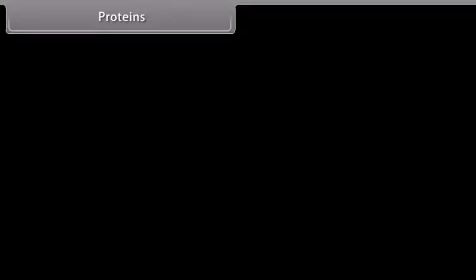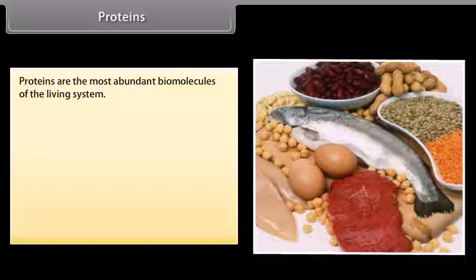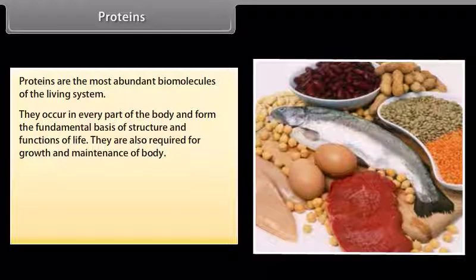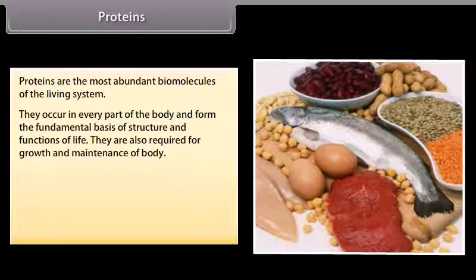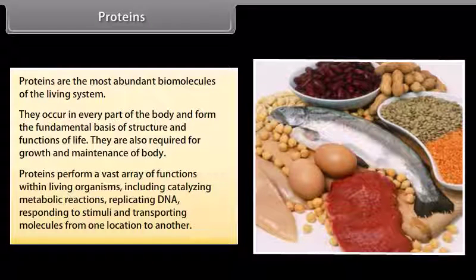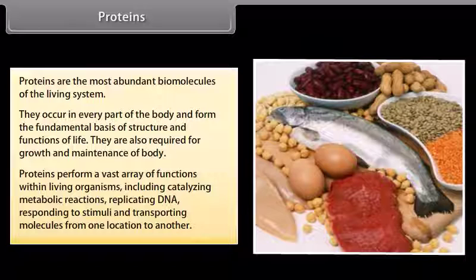Proteins are the most abundant biomolecules of the living system. Chief sources of proteins are milk, cheese, pulses, peanuts, fish, meat, etc. They occur in every part of the body and form the fundamental basis of structure and functions of life. They are also required for growth and maintenance of body. Proteins perform a vast array of functions within living organisms, including catalyzing metabolic reactions, replicating DNA, responding to stimuli and transporting molecules from one location to another.